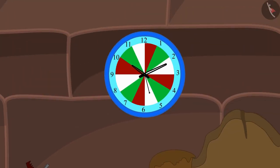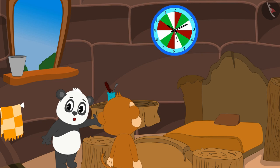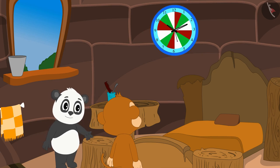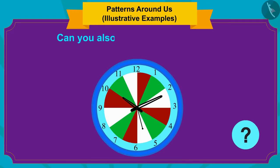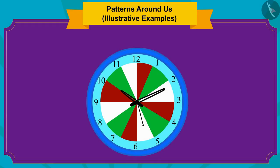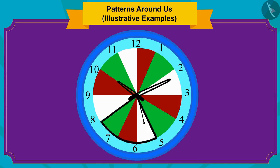Golu looked at the clock hanging on his wall and immediately pointed at the clock to Babban and said, 'Look, Babban, this is a kind of pattern in my watch as well. Can you understand what the pattern is?' Children, can you also find the rule of the pattern made in Golu's clock? Here, a group of white, red and green strips are repeated in order to form a pattern.